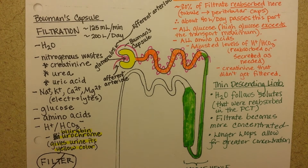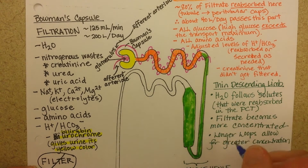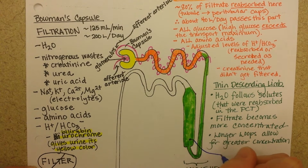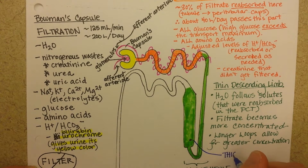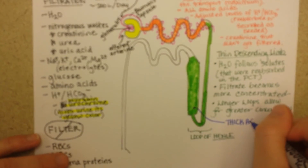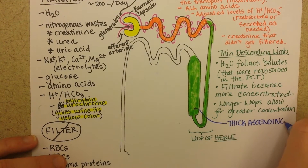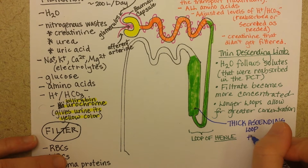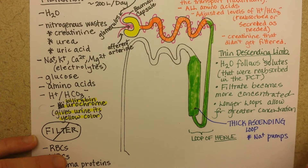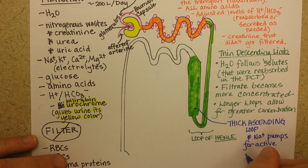So then the thick ascending limb — when I see that thickness to it, it tells me it's doing a lot of active transport. And sure enough, it has lots of pumps. Those require ATP for active sodium reabsorption.